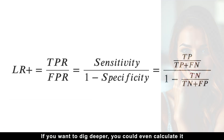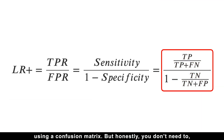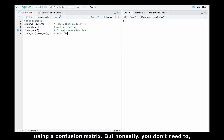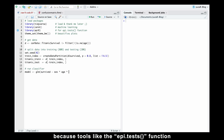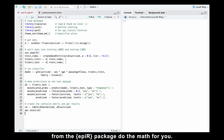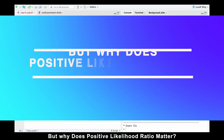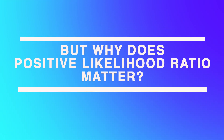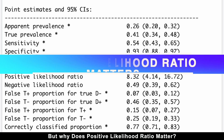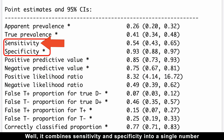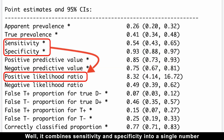The false positive rate, which is one minus specificity, shows how often the test mistakenly says healthy people are sick. You could calculate it using a confusion matrix, but tools like the epi.tests function from the epiR package do the math for you. The positive likelihood ratio combines sensitivity and specificity into a single number that works across different situations.